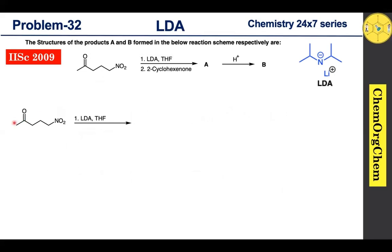Now let's look at our substrate. This position is acidic since it is near the carbonyl carbon, and similarly this methyl group is also acidic because it is also near the carbonyl carbon. Apart from this, the substrate has one more acidic site here, because this position is near to the nitro group. The nitro group is one of the most powerful electron-withdrawing groups — if you generate a carbanion, it will be stabilized by the nitro group. So our substrate has three acidic sites.